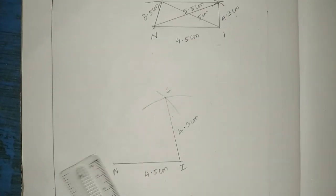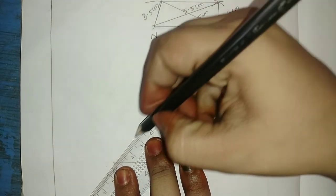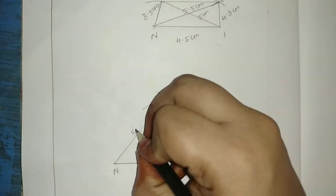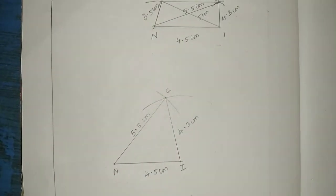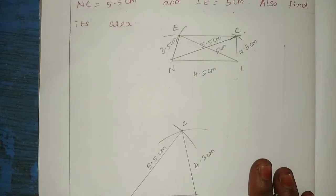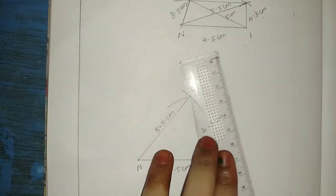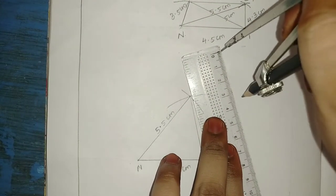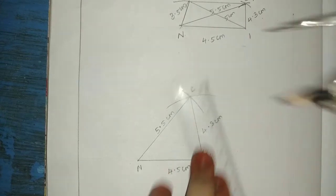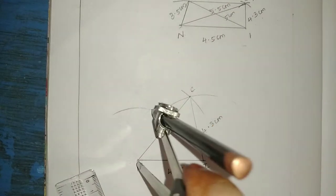Next, NC is 5.5 cm. Clear. Now next, NE is 3.5 cm. So composite is 3.5 cm. Measure, and when we cut, we cut N, C, R.